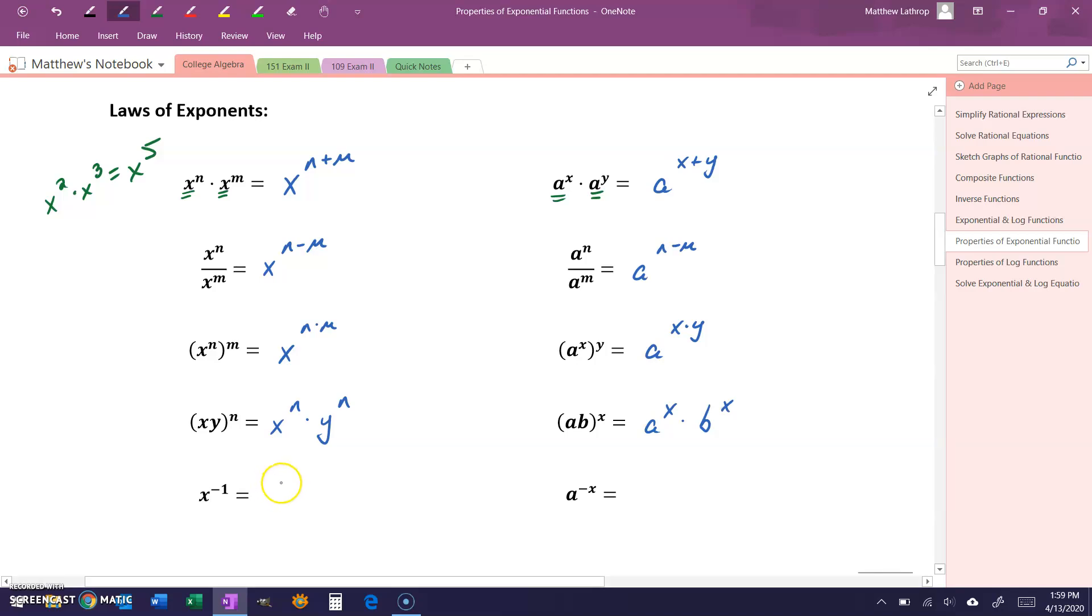x to the negative nth power would be the same thing as 1 over x to the nth power, meaning that a to the negative x power would be the same thing as 1 over a to the x power. So we can use that idea of negative exponents to generate reciprocals of statements.